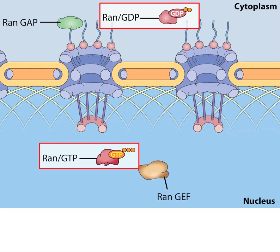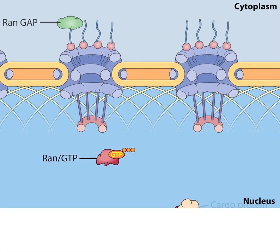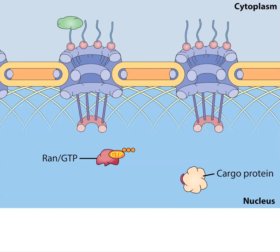Similar to imported proteins, proteins are targeted for export from the nucleus by specific amino acid sequences called nuclear export signals. Nuclear export signals are recognized by receptors within the nucleus called exportins, which direct protein transport through the nuclear pore complex to the cytoplasm.